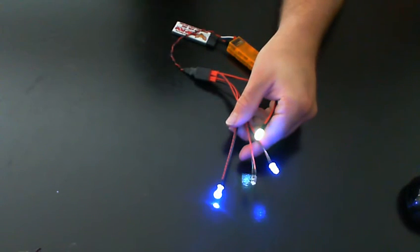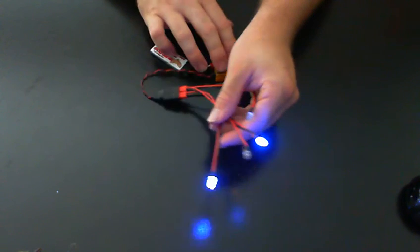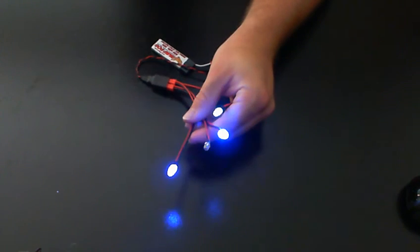You cannot hook these to anything that's not 5 volts. That's why I recommend running it through a receiver. The receiver regulates the 5 volts out to these and will prevent you from burning them out.